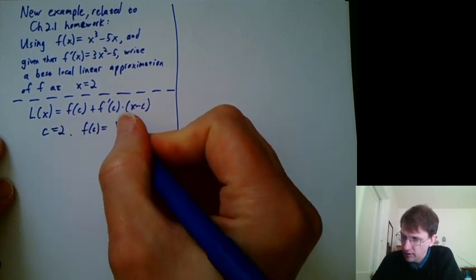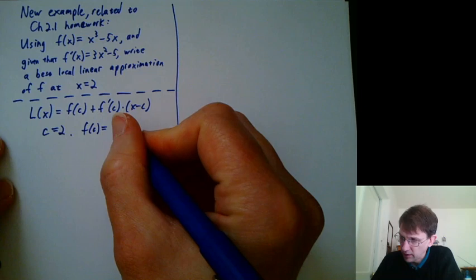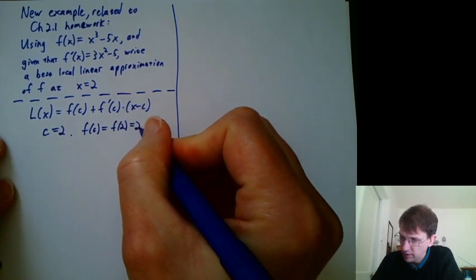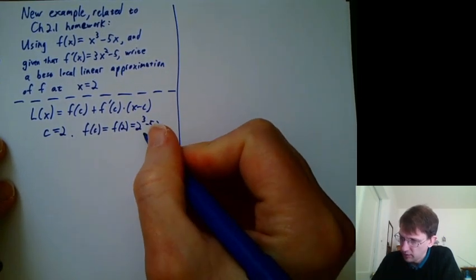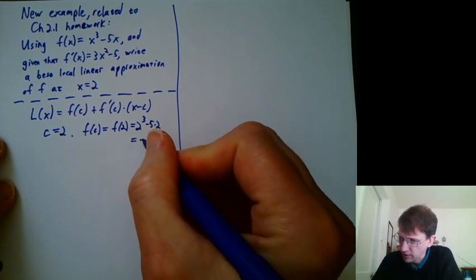f(c) would be f(2), which is 2³ - 5×2, which turns out to be -2.